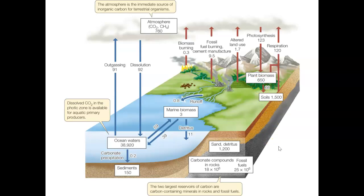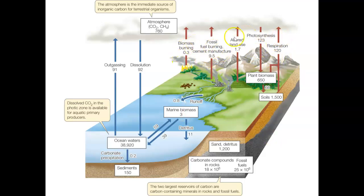On a diagram, pools are shown as text boxes and sometimes list the amount of carbon stored, allowing you to do calculations. Fluxes are labeled with arrows and can also have numbers associated with them.